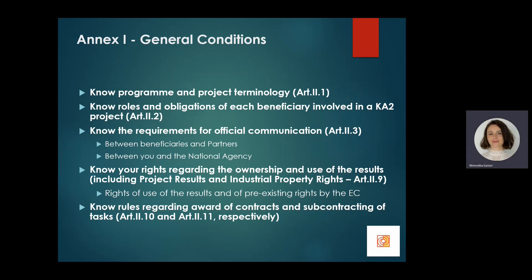General conditions, Annex 1 to the main body of your grant agreement, starts with three important articles providing definitions of various terms, describing your roles and responsibilities as both the beneficiary and coordinating partner, and defining how official communication between different parties should look. Article 2.9 defines rights regarding ownership and use of project results and industrial property rights, and articles 2.10 and 2.11 provide rules regarding award of contracts and subcontracting of tasks.